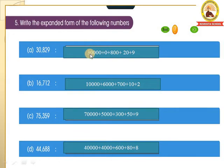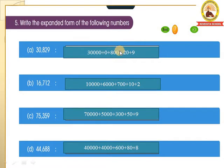Write down 30,000. 0 is in the 1000th place, so write as it is: 0. 8 is in the 100th place, so write down plus 800. 2 is in which place children? 2 is in the 10th place, so write down plus 20. Plus 9 is in the 1st place, so write down 9.